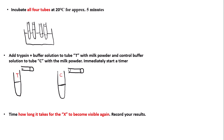When you start the timer, you need to time how long it takes for the X to become visible again, because this indicates that the trypsin has digested the casein into small and soluble peptides. Your control X won't become visible because there is no trypsin present. Record how long it takes for the X to become visible in a results table, because you will need to draw a graph later.